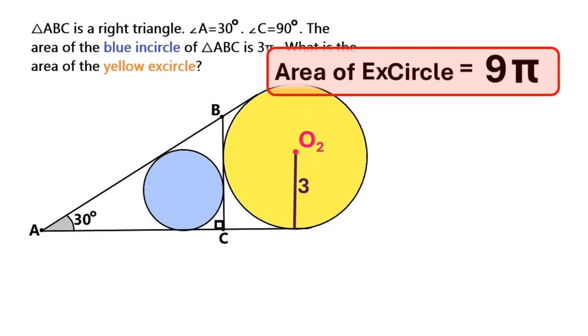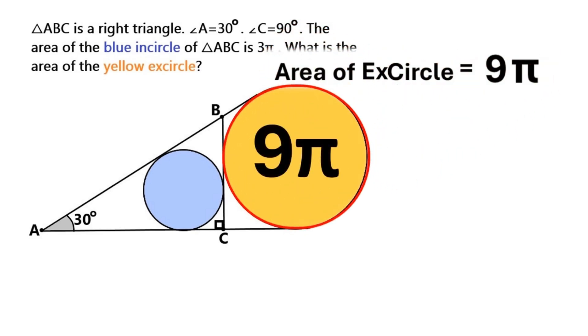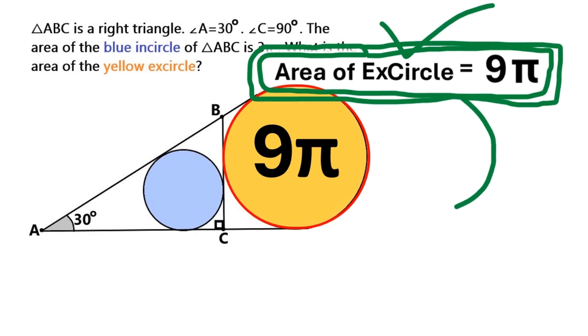So there we are people. We found the area of the yellow excircle, and it's 9π. If you enjoyed this video, make sure you push the like button and don't forget to subscribe so that you don't miss our future videos. Have a good day and see you soon.